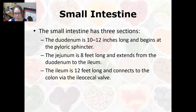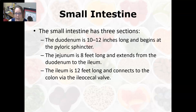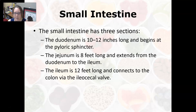The small intestine has three sections. The duodenum is 10 to 12 inches long, begins at the pyloric sphincter, has a C-shape, and is where the pancreas and gallbladder add their secretions. The jejunum is eight feet long and extends from the duodenum to the ileum. The ileum is 12 feet long and connects to the colon via the ileocecal valve.